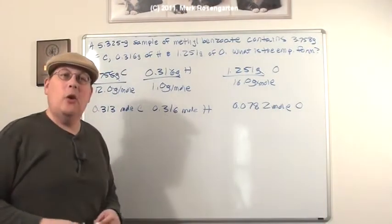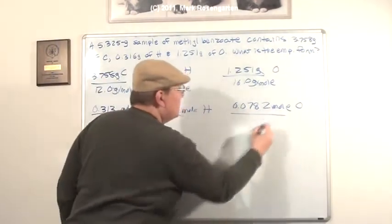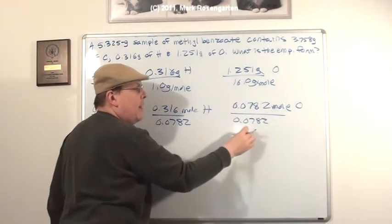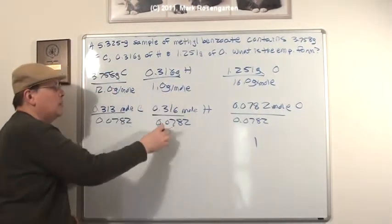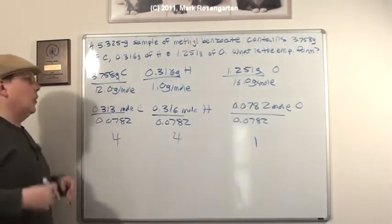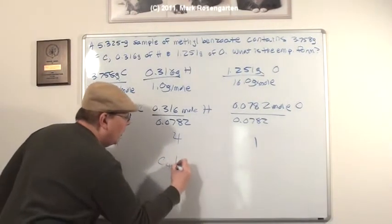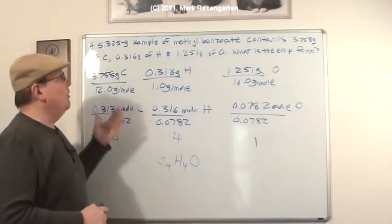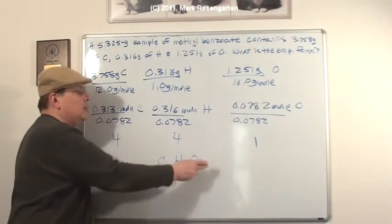We have to turn these into whole numbers. The best way to do that is to divide all of them by whichever of the mole values is the smallest. That way, the smallest one automatically comes out to 1, because it simplifies, and the others will come out to a whole number. So once we simplify this to whole numbers, it's a 4 to 4 to 1 ratio, or C4, H4, O. That's the empirical formula of methylbenzoate. There's a 4 to 4 to 1 ratio of carbon to hydrogen to oxygen.